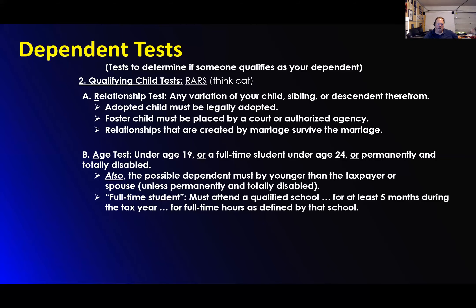The age test: under age 19 — so 18 or younger, up to and including age 18 — or a full-time student under age 24, so age 23, or permanently and totally disabled. Those are the age tests. That's the primary age test.